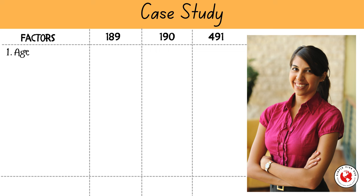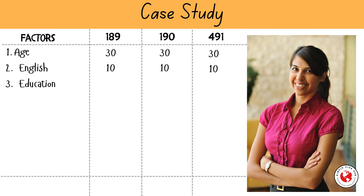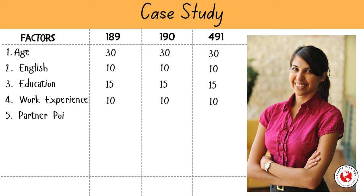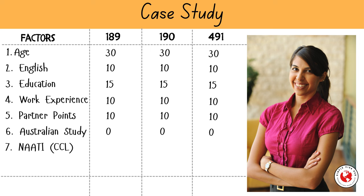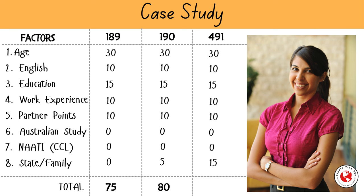Let's break down her points. Simran is 30 years old, which earns her 30 points for being in the 25–32 age bracket. She scored 7 in each component of the IELTS test, giving her 10 points — if she had a higher score, she could get up to 20 points. Her master's degree in IT with a positive skills assessment earns her 15 points. She has 5 years of skilled work experience, giving her 10 points. Her partner meets the age, English, and skill criteria, giving her 10 points. She does not meet the Australian study requirement and has not completed any credential language test, so she gets no points for those. Nomination for subclass 190 will give her 5 additional points, while nomination for subclass 491 will give her 15 points. Adding it all up: Simran gets 75 points for subclass 189, 80 points for subclass 190, and 90 points for subclass 491 — putting her in a competitive position for General Skilled Migration Visas.